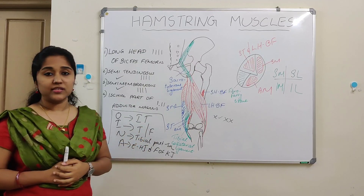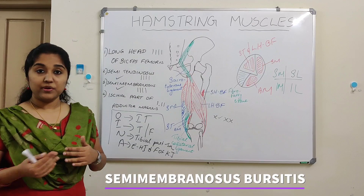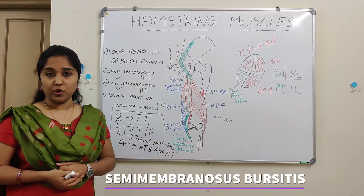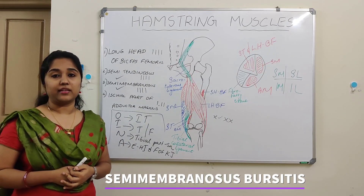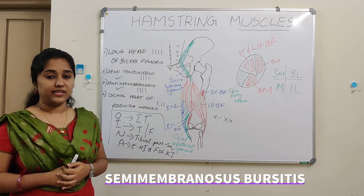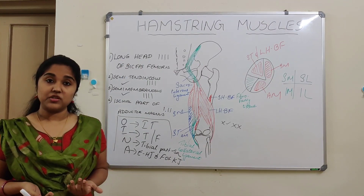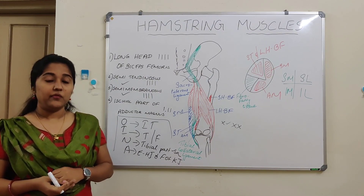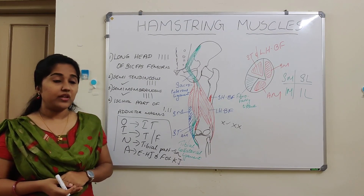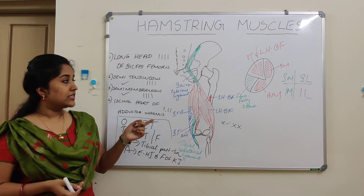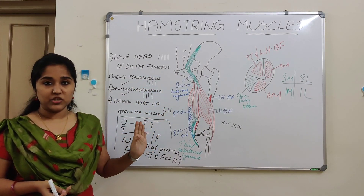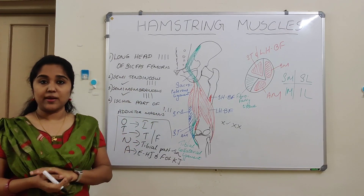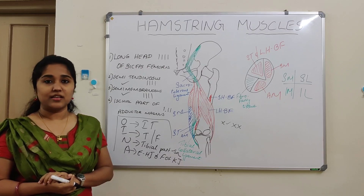Another condition is semimembranosus bursitis. The bursa is present between the tendon of the semimembranosus and the bone, and if this bursa gets inflamed, that can lead to semimembranosus bursitis. So these are the main points about the hamstring muscles — the four muscles belonging to the hamstring group, the four criteria, true and modified hamstrings, and the origin, insertion, nerve supply, and action of each muscle, along with the applied aspects, which are usually asked as viva questions.